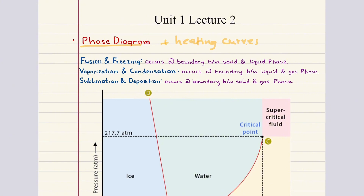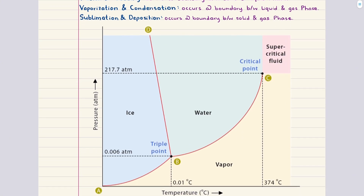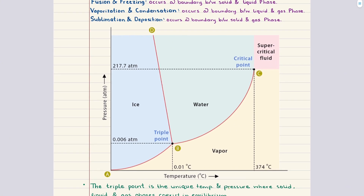A phase diagram is essentially an equilibrium map. The horizontal axis represents temperature and the vertical axis represents pressure. Every point on this diagram corresponds to a specific set of conditions, and the location of that point tells us which phase of matter — solid, liquid, or gas — is thermodynamically the most stable.